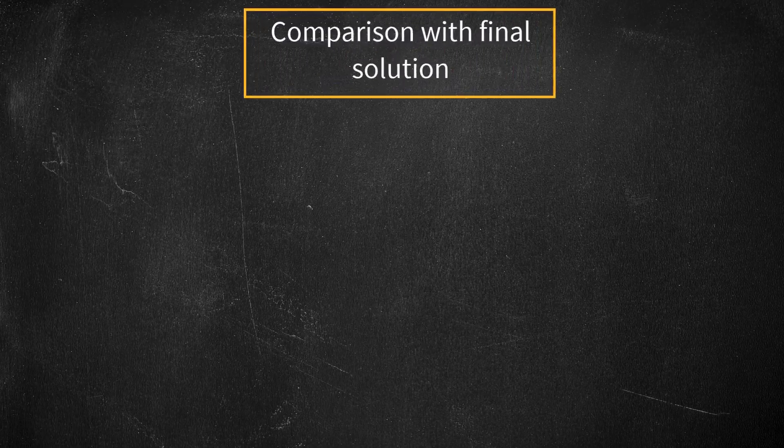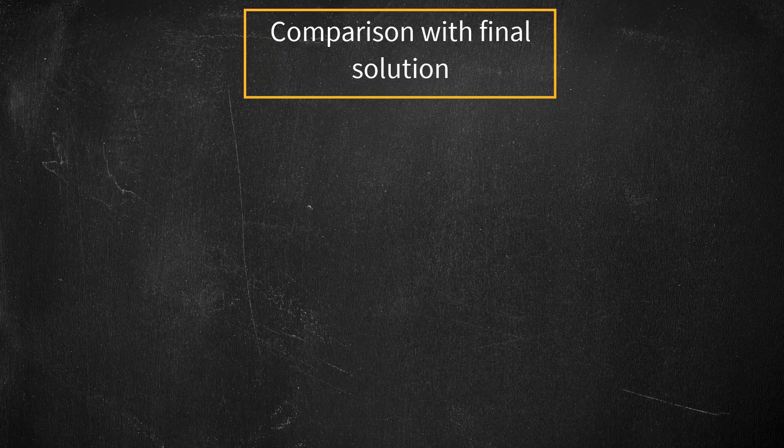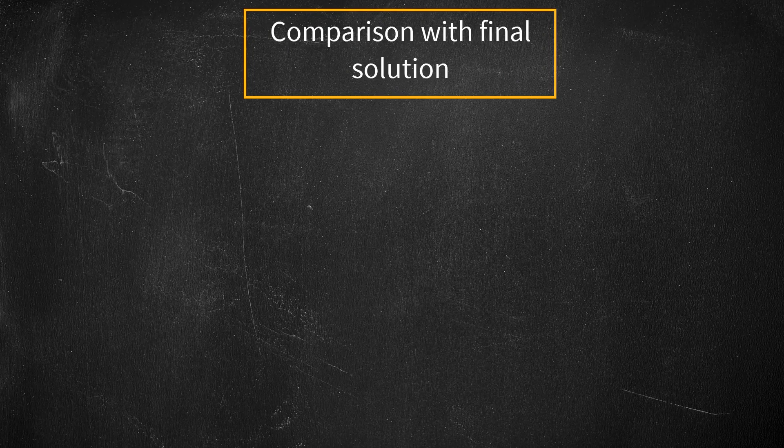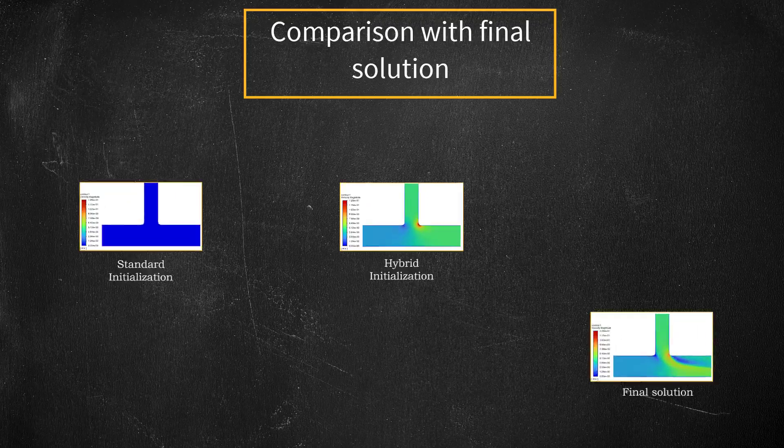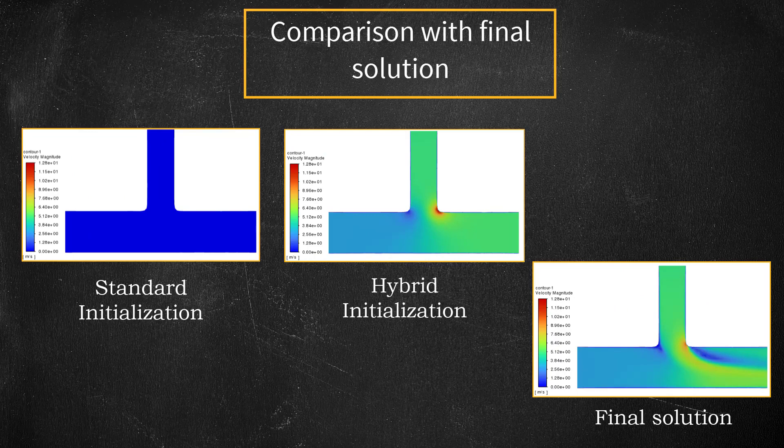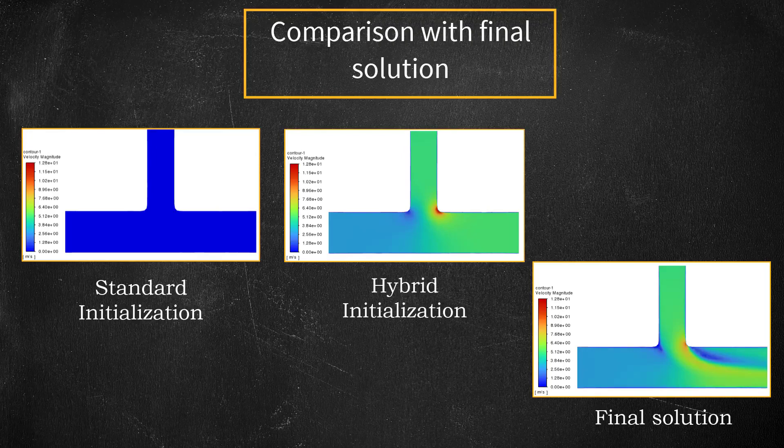To get a clear picture of how the standard and the hybrid initialization methods compare to the final solution, let us look at the velocity contours before and after the simulation is completed. Here, it is evident that the hybrid initialization provides closer initial guess to the solution than the standard initialization.